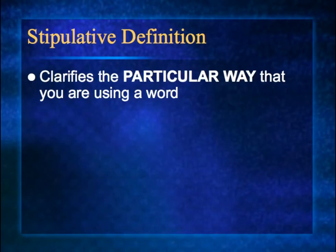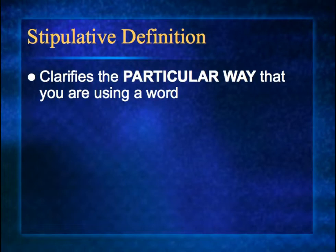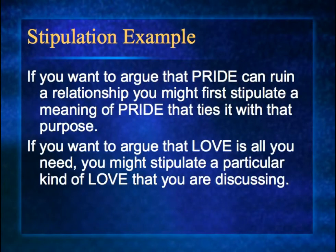A stipulative definition clarifies the particular way that you are using a word. So if you want to argue that pride can ruin a relationship, you must first stipulate a meaning of pride that ties it with that purpose. If you want to argue that love is all you need, you might stipulate a particular kind of love that you are discussing.